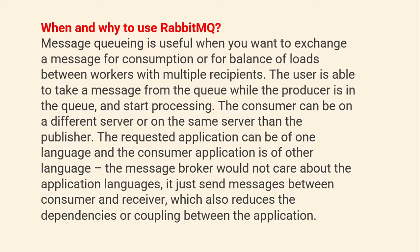When and why to use RabbitMQ? Message queuing is useful when you want to exchange a message for consumption or for load balancing between workers with multiple recipients. The user is able to take a message from the queue while the producer is in the queue and start processing. The consumer can be on a different server or the same server as the publisher. The requested application can be of any language and the consumer application can be of another language — the message broker does not care about the application language. It just sends messages between the consumer and the receiver, which also reduces dependencies or coupling between applications.